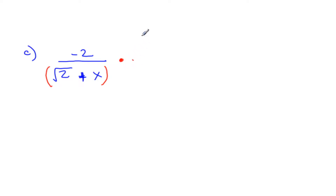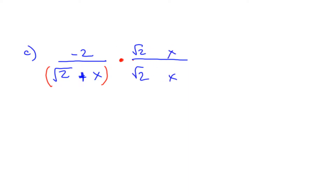So we are still going to multiply by 1, but the 1 we're going to choose is almost the same as this — it's going to be root 2 and an x. But it's always going to take this sign and make the opposite. So in our case we're going to make it negative. If this was a negative sign, then these would be positive. This is called the conjugate — it's a good math word. So we multiply by the conjugate: opposite sign.